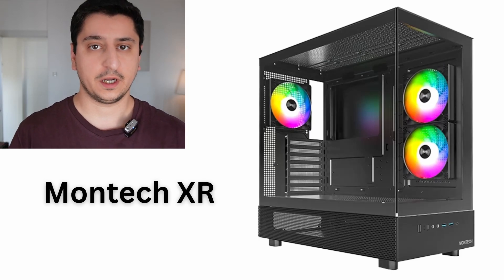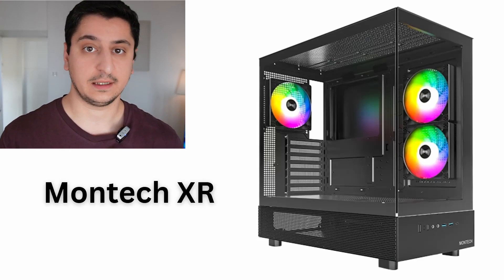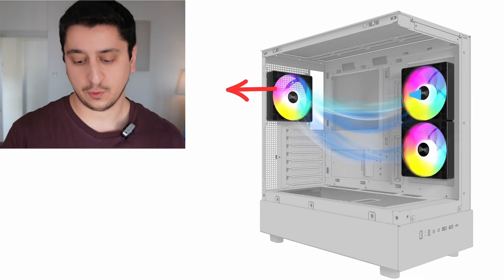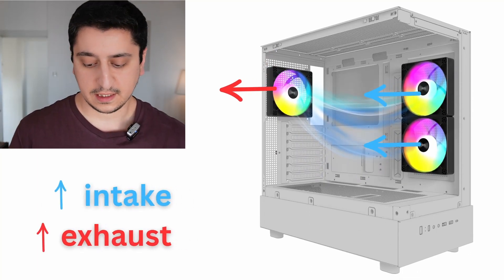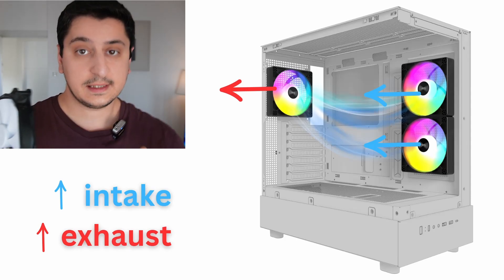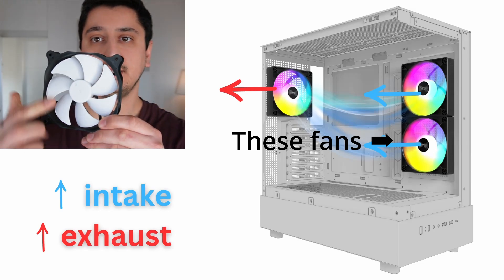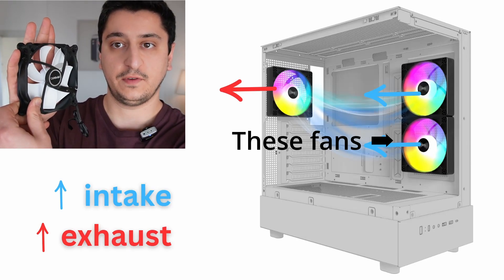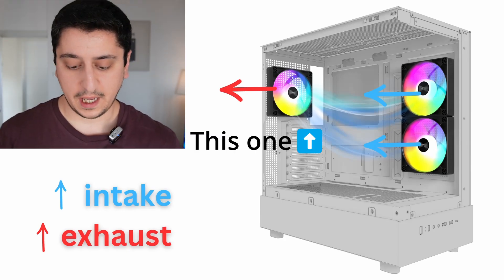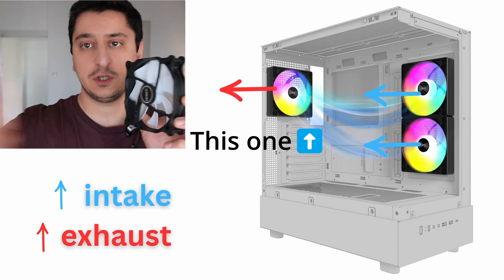Let's take an example of a case that has reversed and standard fans. Over here I have the Montec XR PC case. This is a fish tank style case and the way that the airflow works: the two fans at the front on the side panel act as intake fans, and the fan at the back acts as an exhaust fan. The intake fans have their blades facing the panel, pushing air inward, while the back fan is installed with its face towards the inside of the case, pushing air outside.